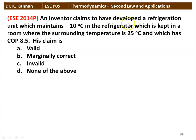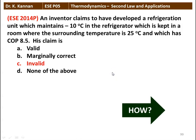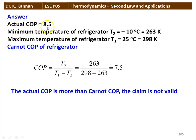Next question: an inventor claims to have developed a refrigeration unit which maintains −10°C in the refrigerator kept in a room at 25°C, and which has a COP of 8.5. His claim is valid, marginally correct, invalid, or none of the above. The claim is invalid. Carnot COP = T2/(T1−T2) = 263/(298−263) = 7.5. The actual COP of 8.5 is more than the Carnot COP, which is the highest possible value. Therefore the claim is not correct.